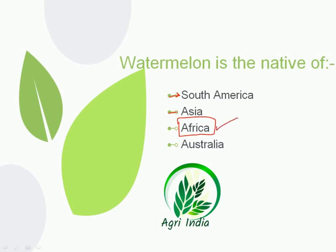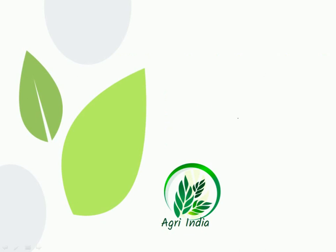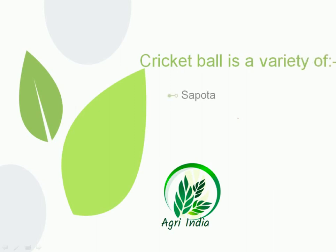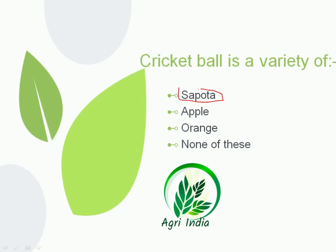Next question: Cricket Ball is a variety of — options are sapota, apple, orange, and none of these. Cricket Ball is a variety of sapota. We should remember not to confuse it with the apple variety 'Ball Sundari,' where the word 'ball' also appears. The correct option is sapota.